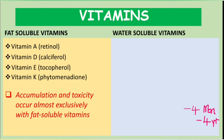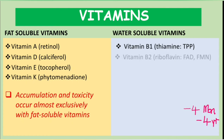Now let's talk about water-soluble vitamins. The first is vitamin B1, also known as thiamine. Its active form, which is a coenzyme, is thiamine pyrophosphate or TPP. The next is vitamin B2, also known as riboflavin, and its coenzymes are FAD and FMN.